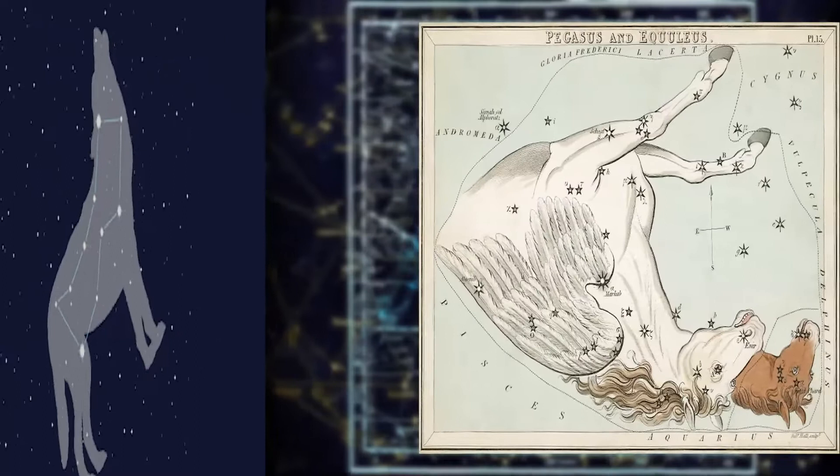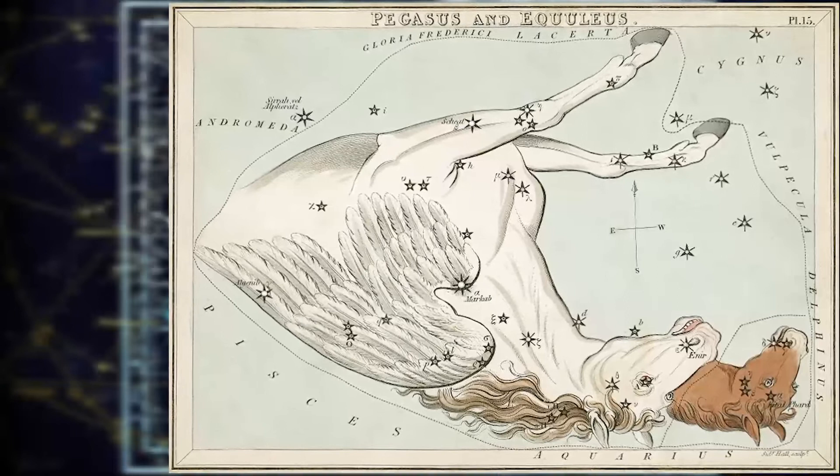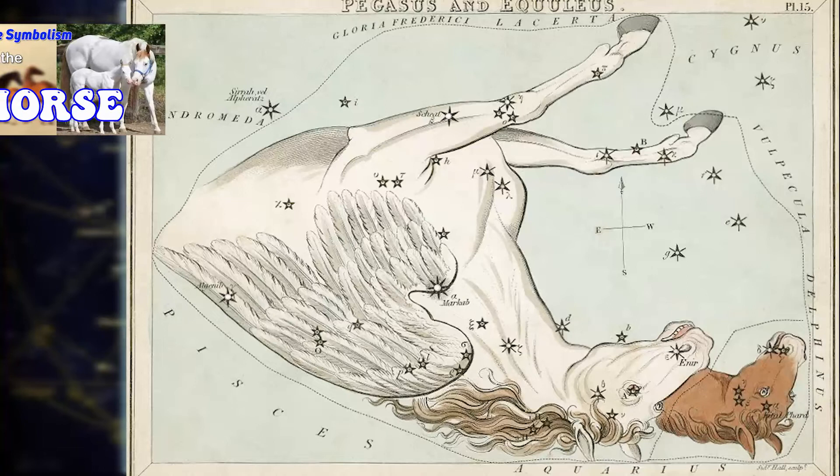Pegasus was a winged horse, and we have described Pegasus within the more general video in the playlist entitled The Symbolism of the Horse.